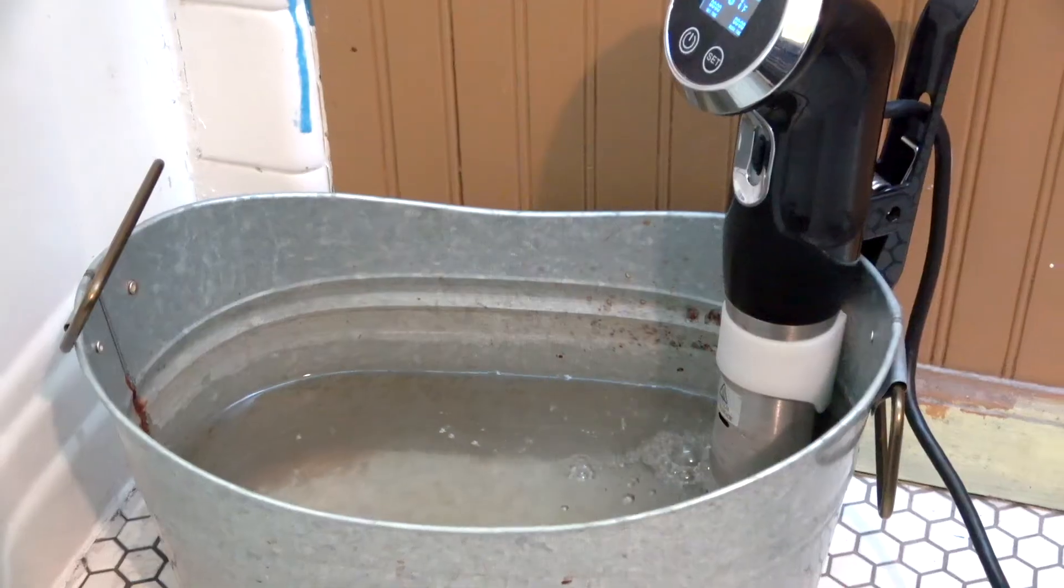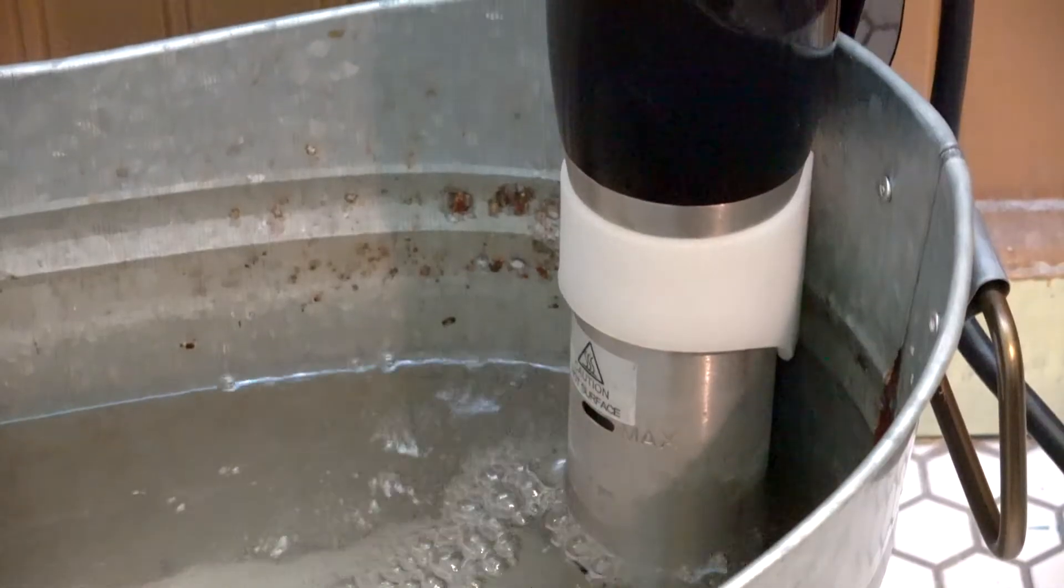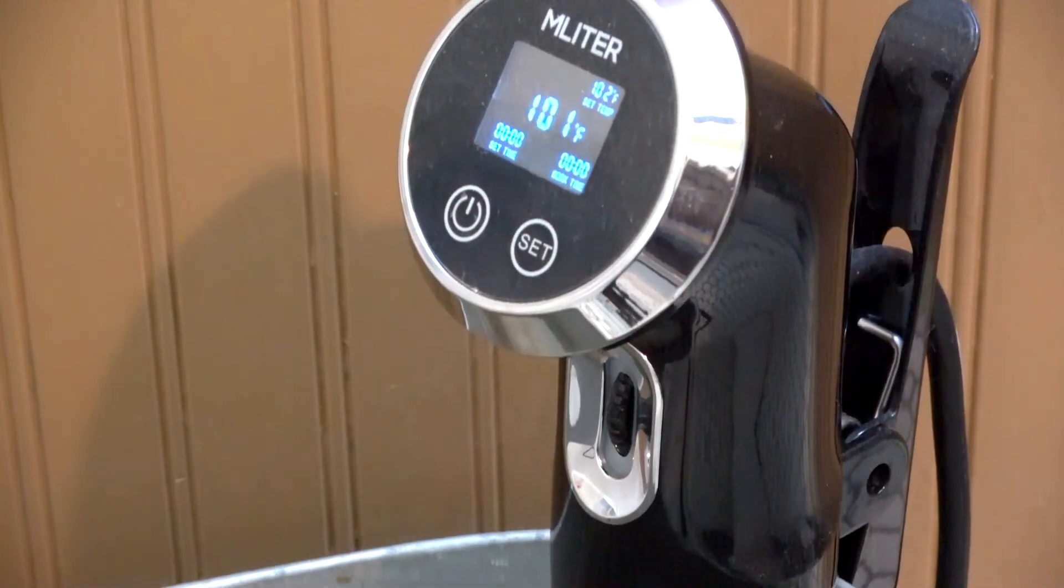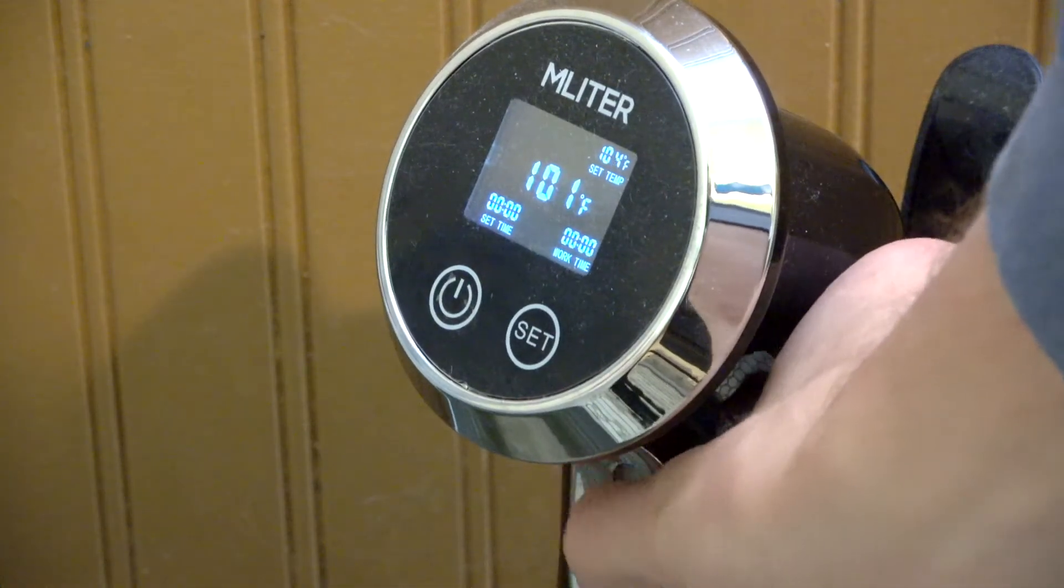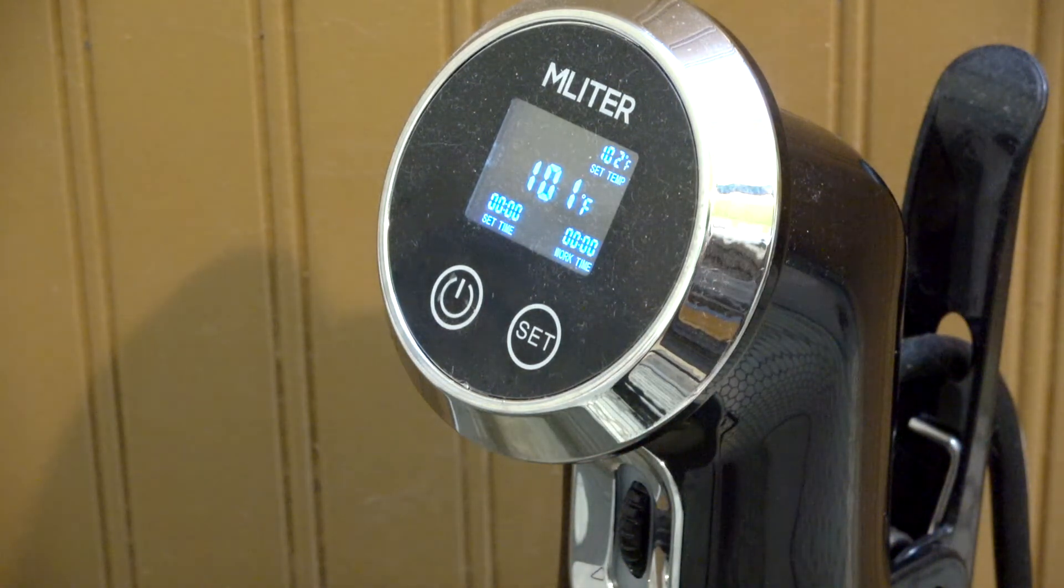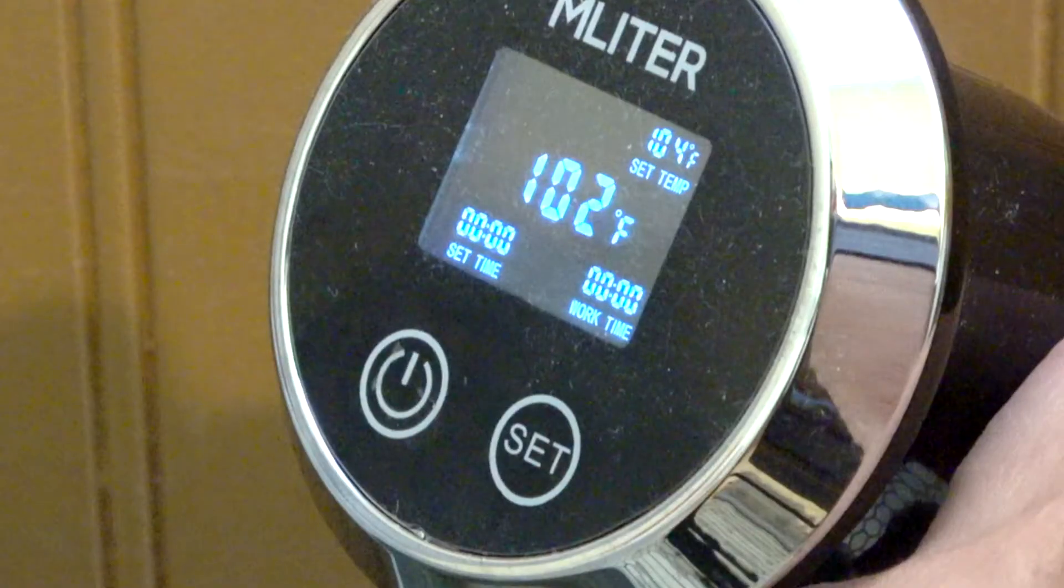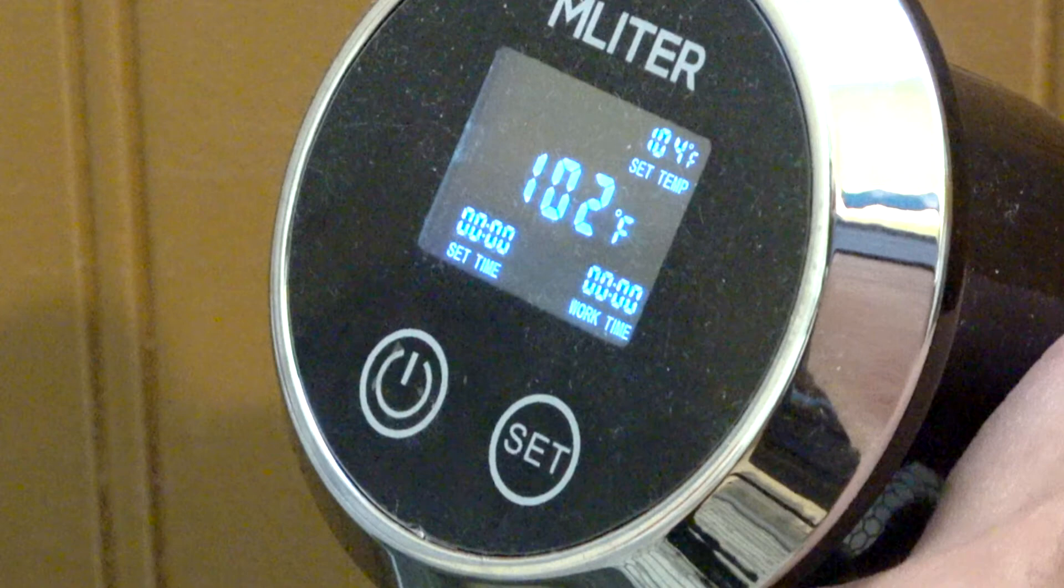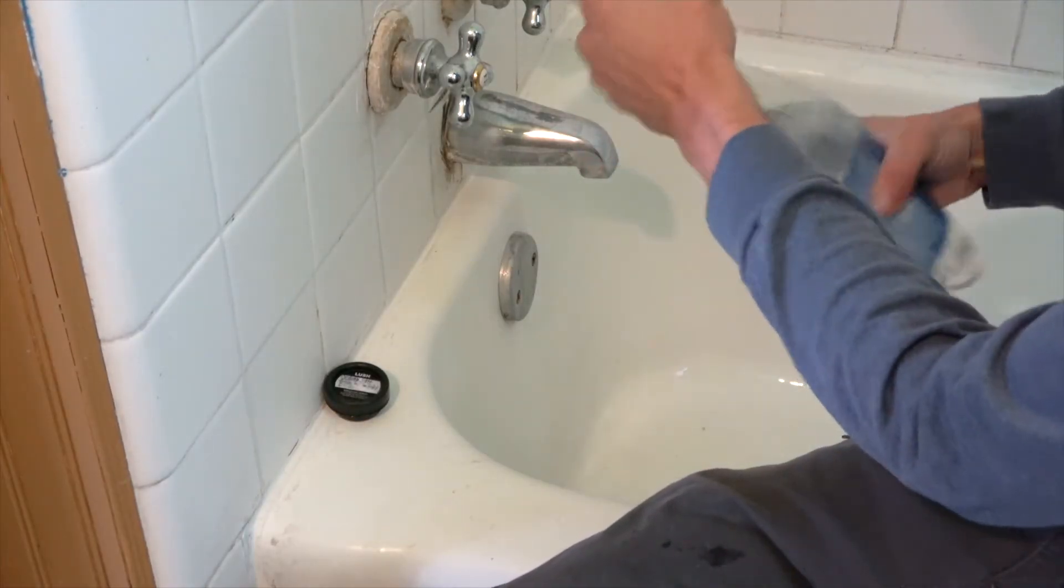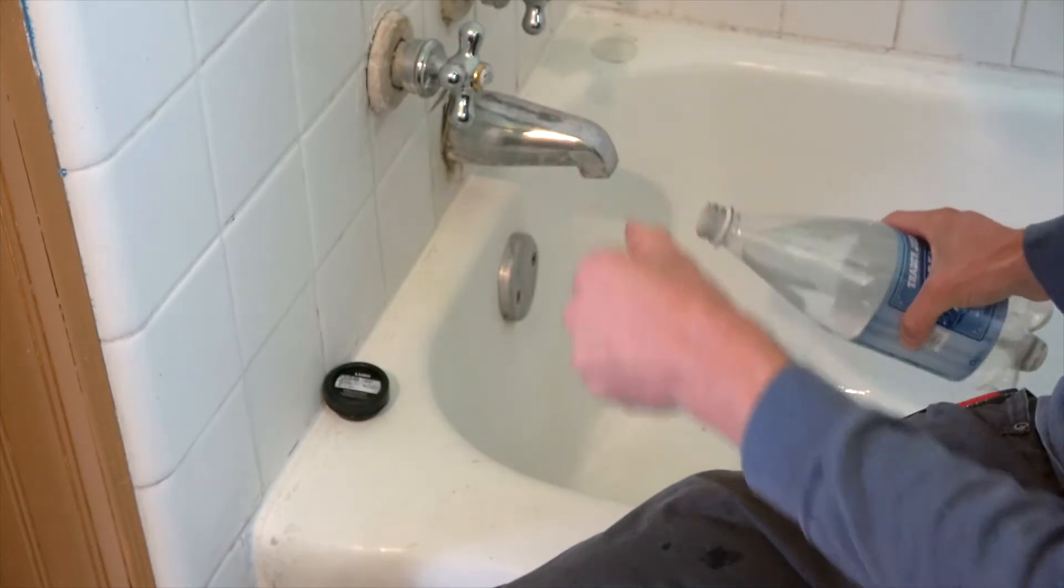I use a sous vide to heat up my chemicals because it's important that your chemistry is at 102 degrees for C41 or 104 degrees for E6. We're doing C41 today, so we're going to stick with 102 degrees. So I'll clean out my water bottles just to make sure there's no particles left over and begin mixing my C41 kit starting with the developer.